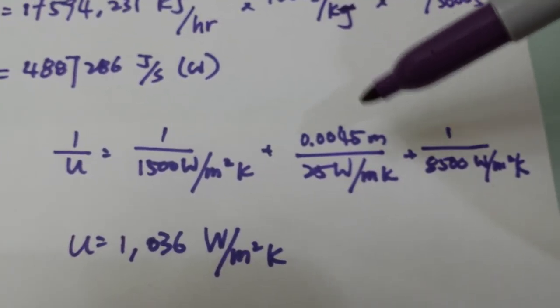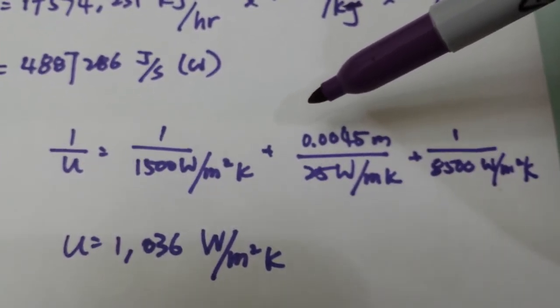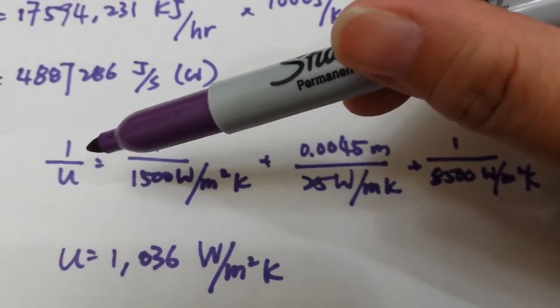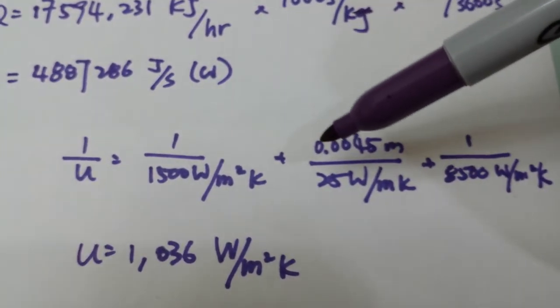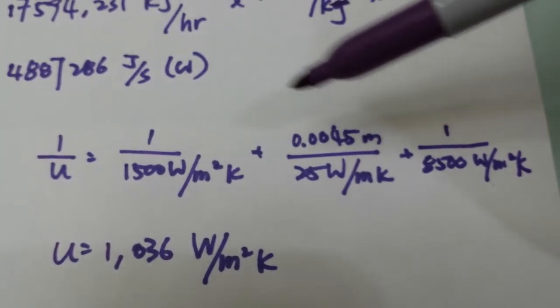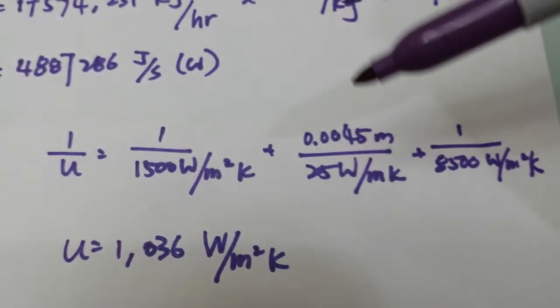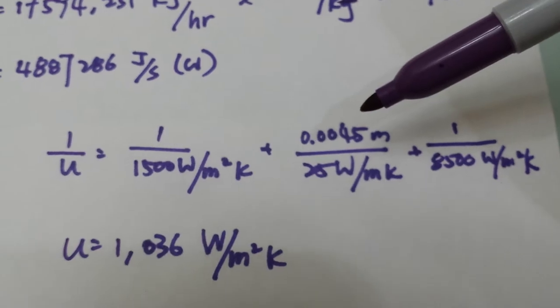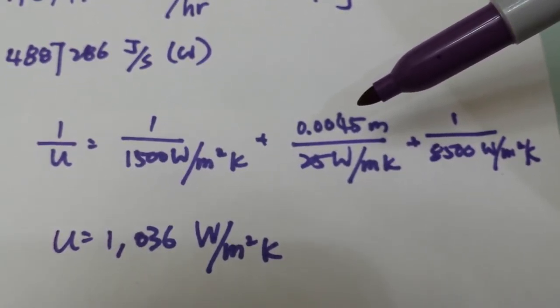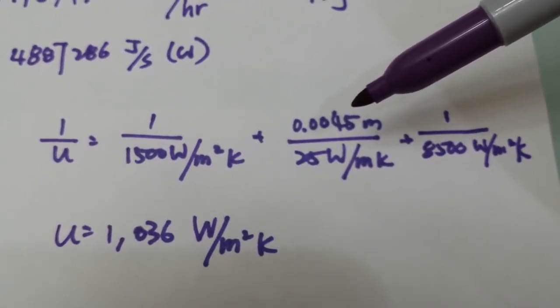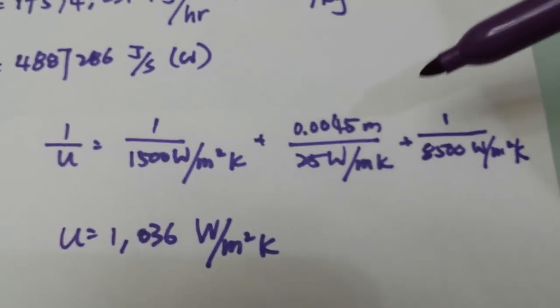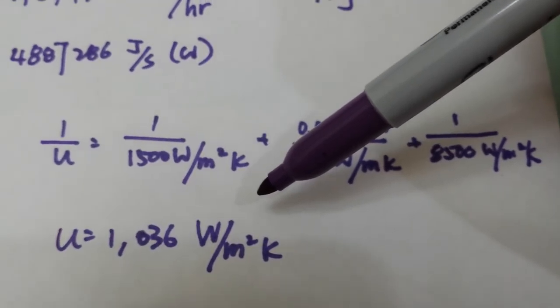This is pretty straightforward too. For a multi-layer system to look for the overall coefficient, we combine them all, each individual system. So the metal plate here has a thickness of 4.5 mm, so it's now 0.0045 meters. Everything is quite straightforward. You calculate the U.